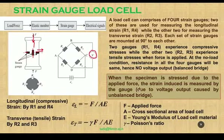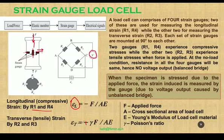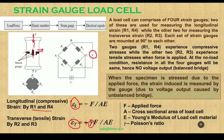When the specimen is stressed due to the applied force, the induced strain is measured by the gauge through the voltage output caused by the unbalanced bridge. The longitudinal strain developed by R1 and R4 is given by minus F over AE, where the minus sign indicates compressive stress. The transverse strain sensed by R2 and R3 is given by gamma times F over AE, where gamma stands for Poisson's ratio — one taken as negative and the other as positive.